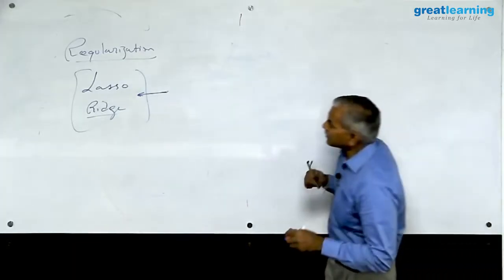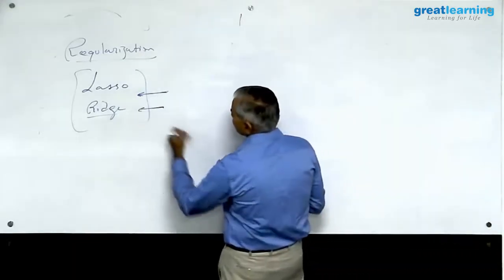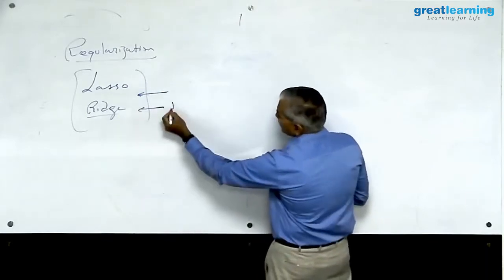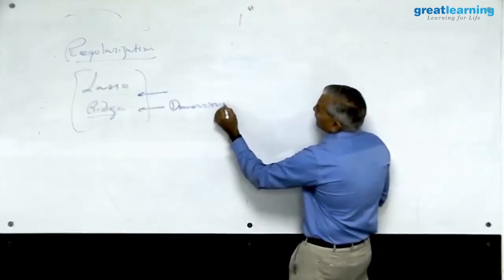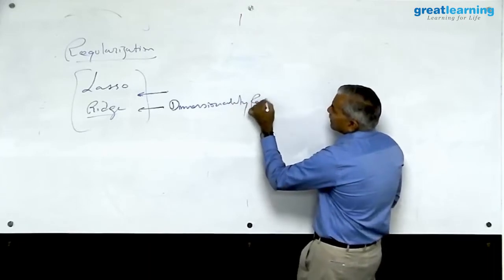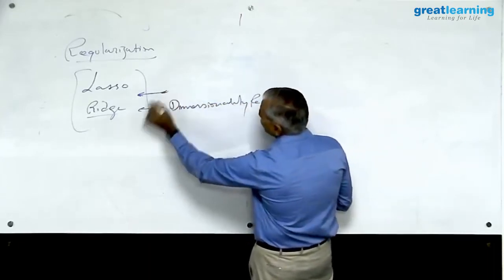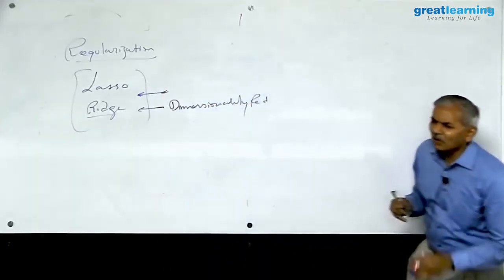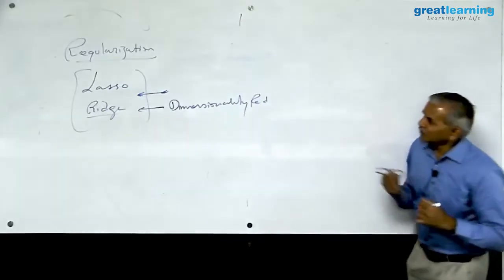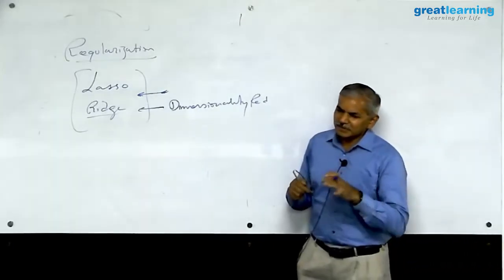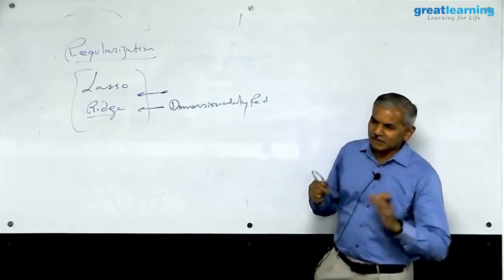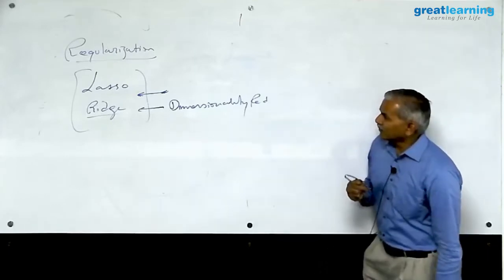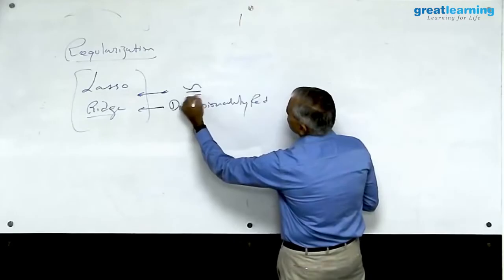Ridge regression helps you to eliminate unnecessary dimensions. It is also used for dimensionality reduction. This one does not eliminate any dimensions but it makes them almost close to useless dimension. Any useless dimensions it tries to suppress the influence of the useless dimension on the target by converting the coefficients very close to zero but it does not make them zero.